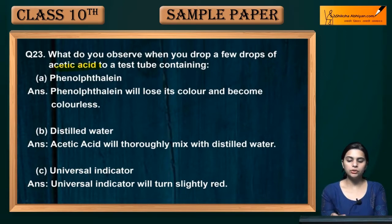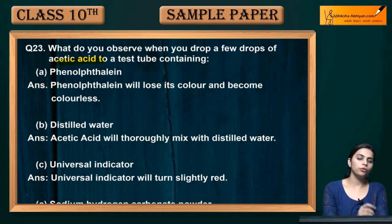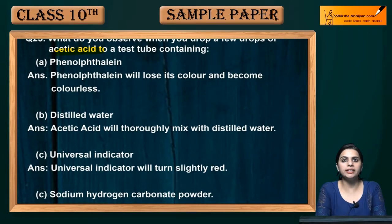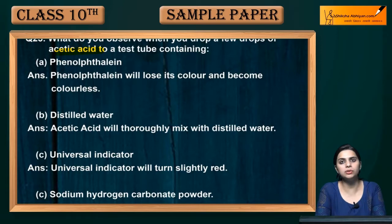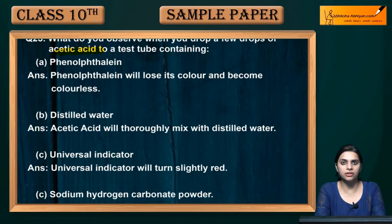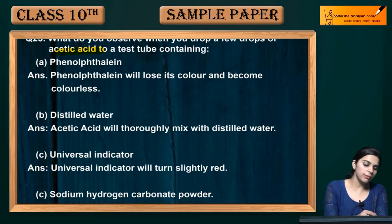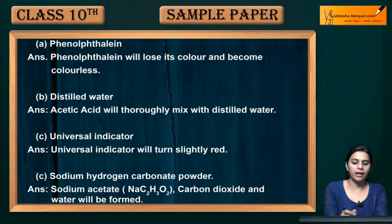You have four test tubes containing acetic acid. In each of the four test tubes you have added different indicators. Indicators can be acidic, basic, or any other type. First of all, when you add phenolphthalein to your acetic acid, what will happen?